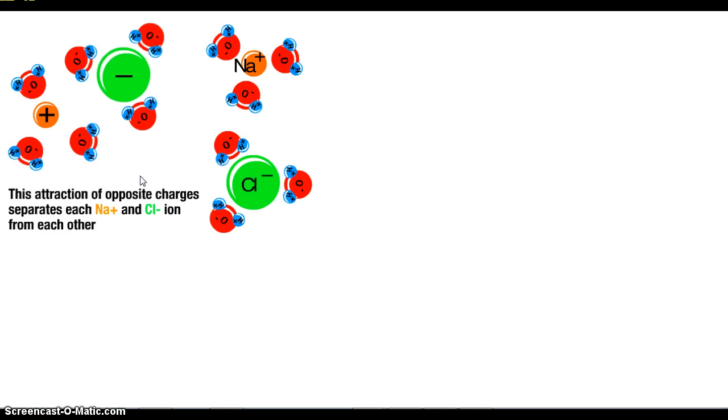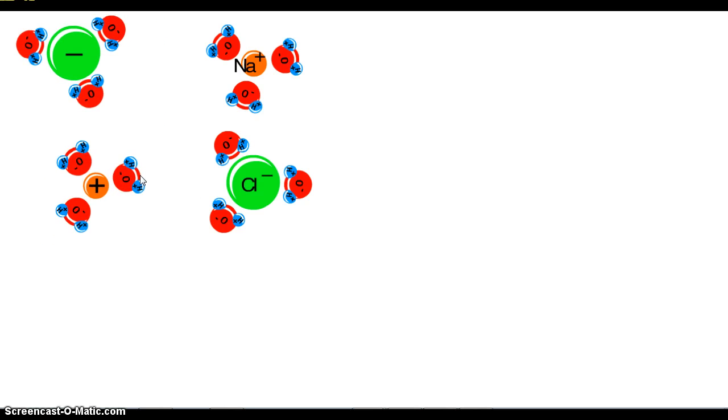It starts breaking apart the salt crystal until each of the sodium and chloride ions are surrounded by water molecules. That's why you can't see it anymore when it dissolves, because instead of having a big chunk of sodium and chloride, the water pulls them apart, and you can't see individual sodium and chloride ions. They are too small.